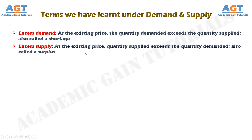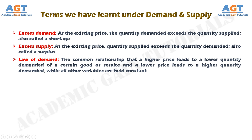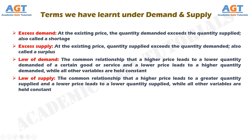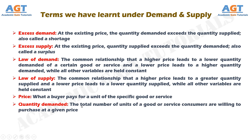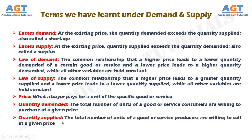Excess supply is a situation in which at the existing price, quantity supplied exceeds quantity demanded, also called a surplus. The law of demand states that a higher price leads to a lower quantity demanded and a lower price leads to a higher quantity demanded, while all other variables are held constant. The law of supply states that a higher price leads to a higher quantity supplied and a lower price leads to a lower quantity supplied, while all other variables are held constant. Price is what a buyer pays for a unit of a specific good or service. Quantity demanded is the total number of units consumers are willing to purchase at a given price. Quantity supplied is the total number of units producers are willing to sell at a given price.